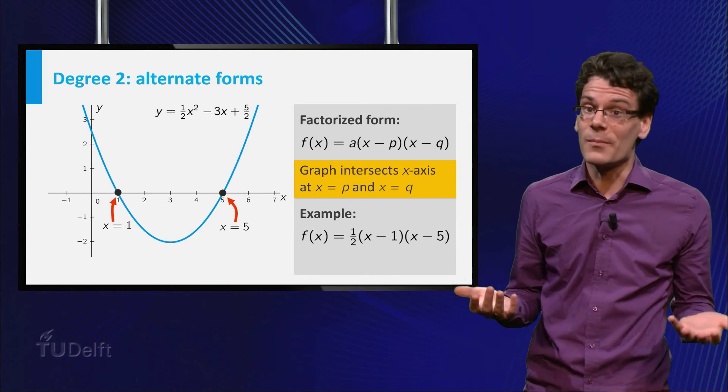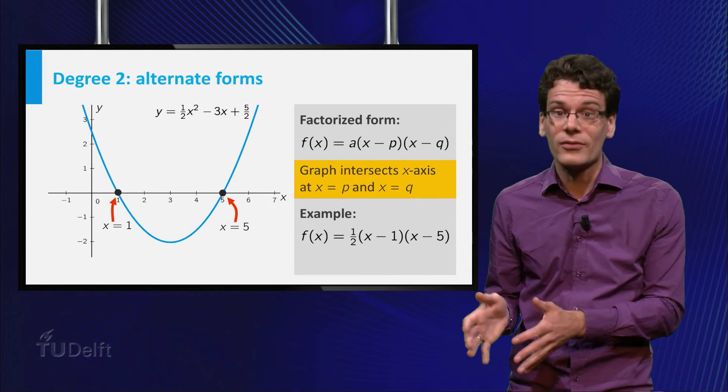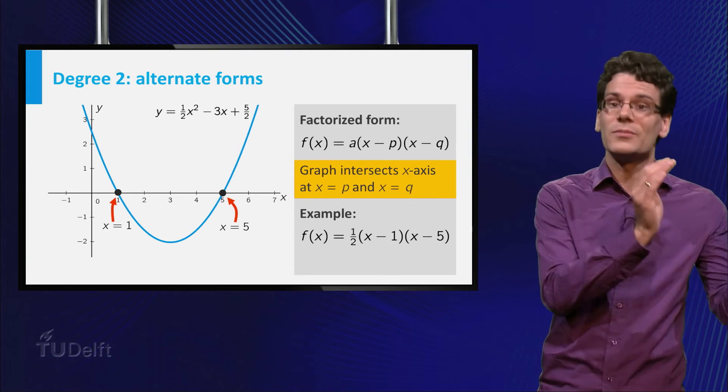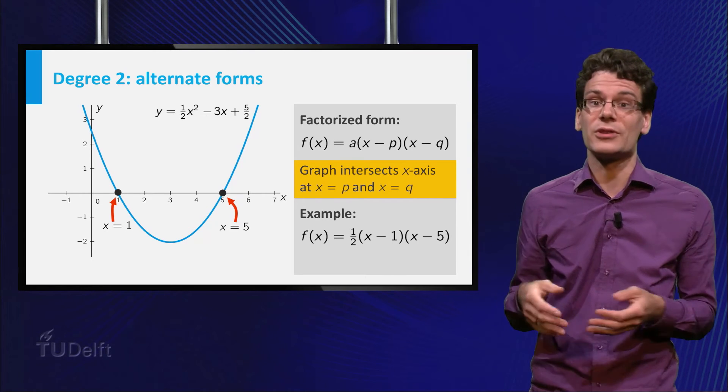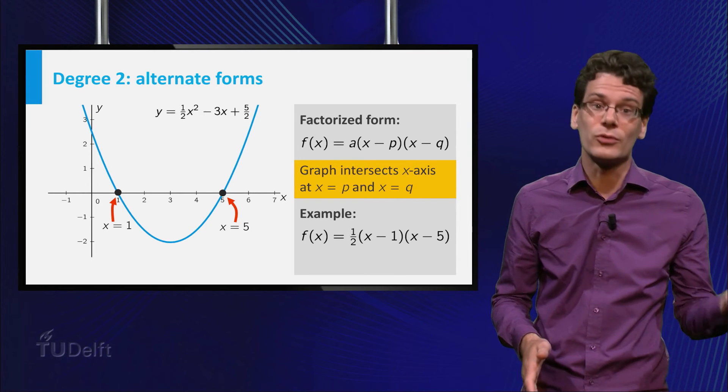The polynomial function in our example can be rewritten as 1 half times x minus 1 times x minus 5. And indeed, you see that the graph intersects the horizontal axis in x equal to 1 and x equal to 5.